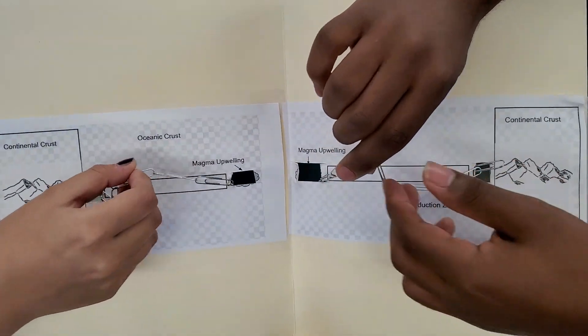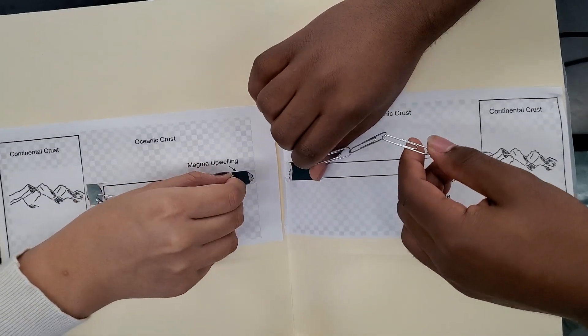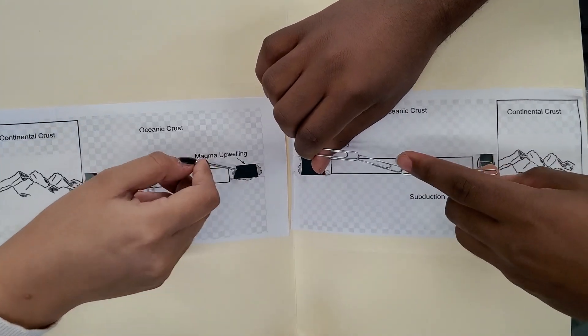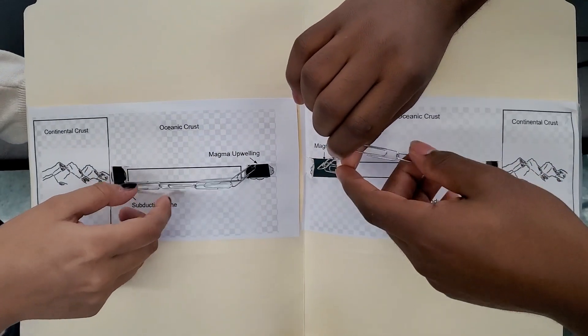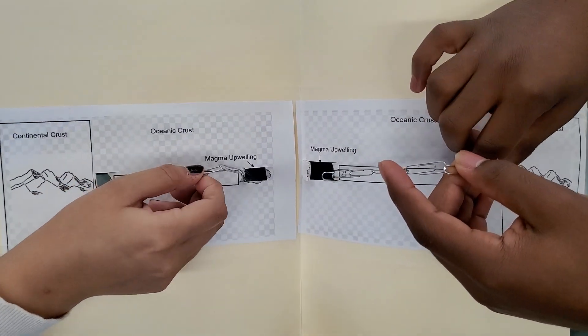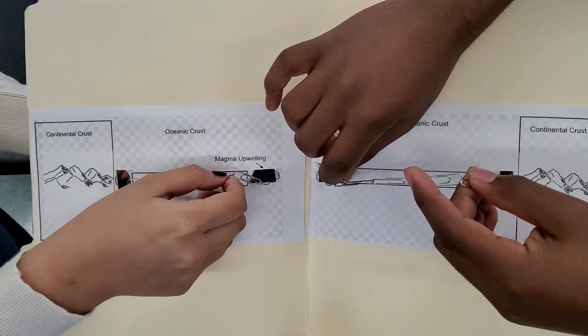All right Nathan, tell me, why do the plates come out of the earth and get pushed apart? Oh, because of the heat from the earth's core, it pushes the magma up from the mantle.